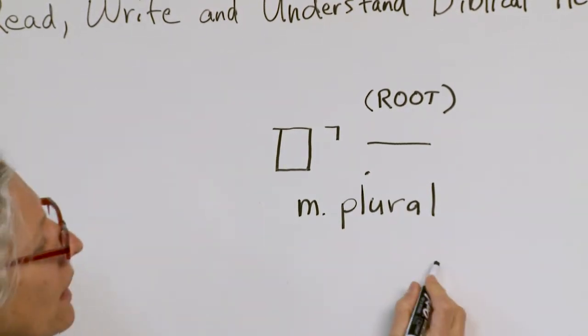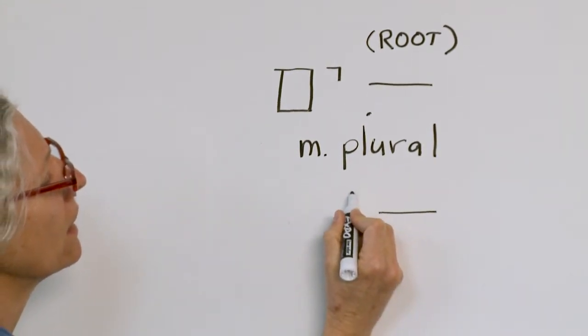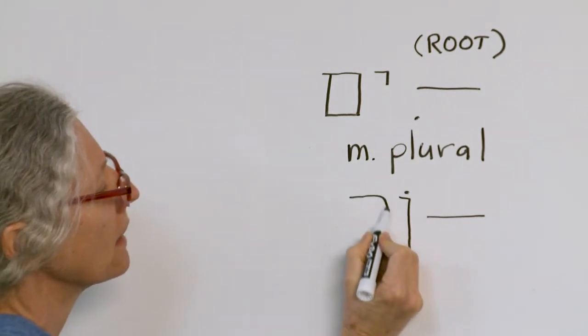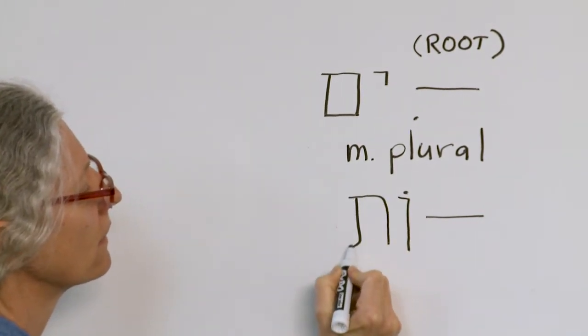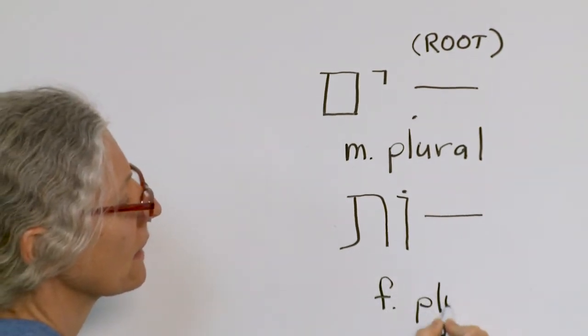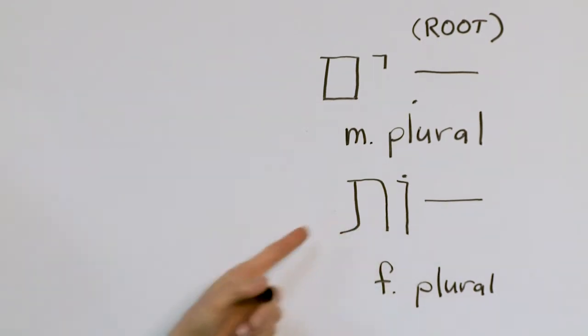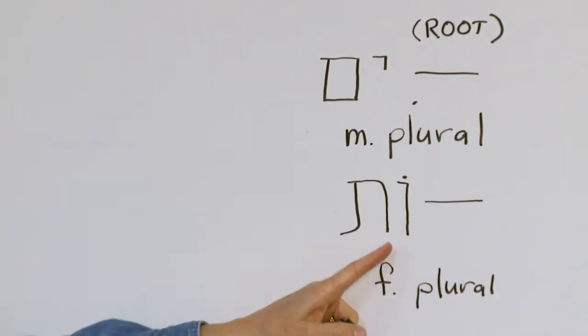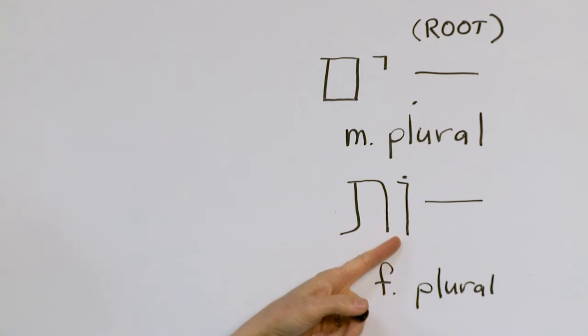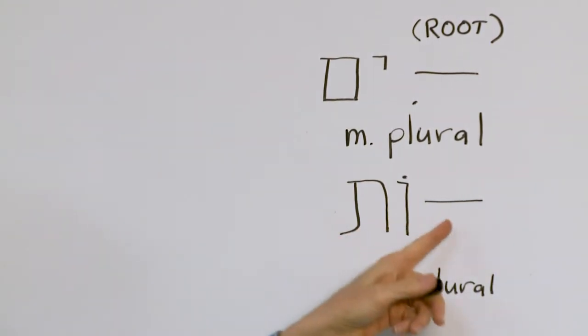Okay? The next one, here's the root. Then you've got a vav-oh and a tav. Okay? That's feminine plural. Now, okay, so that's pronounced ot. Say ot. Oat. All right? So when you see a noun as the root, and it has the vav-oh and the tav at the end, pronounced ot, it makes the noun feminine plural.